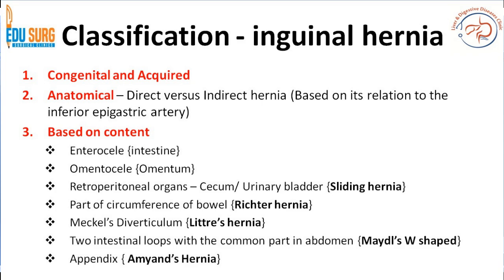When there are two intestinal loops with a common part in the abdomen — a W-shaped hernia — this is known as Maydl's hernia. Appendix in the hernia is Amyand's hernia, and we have a case series of around four cases. When the appendix is inflamed in the hernia it has a different name — that is a quiz for you to find out, or search for our published case series on Amyand's hernia.